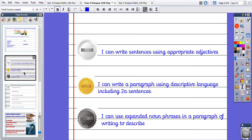Silver, you're going to be finding appropriate adjectives to use. For gold, you're going to be using two A sentences, remembering that's two adjectives separated by a comma in the middle. And for platinum, you're going to use some expanded noun phrases in a paragraph of writing to describe.